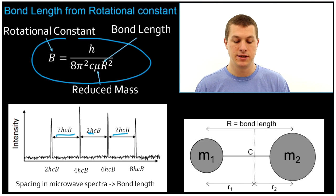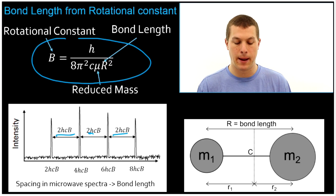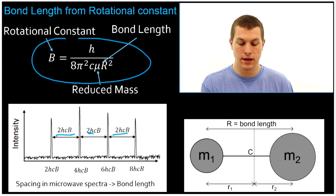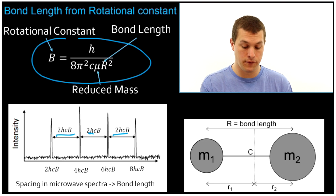It tells us that our rotational constant is equal to Planck's constant divided by 8π² times the speed of light.